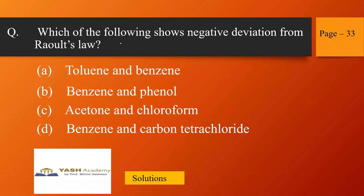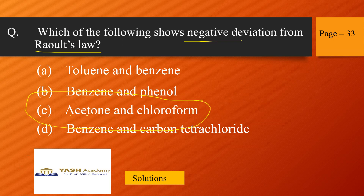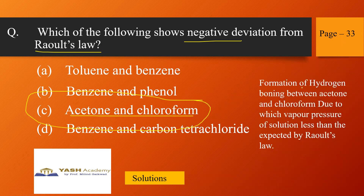Next, from solutions, page 33 — which of the following shows negative deviation from Raoult's law? The correct answer is option C: acetone and chloroform. There is formation of hydrogen bonding between acetone and chloroform, making the solute-solvent interaction much stronger than solvent-solvent and solute-solute interactions. This causes the vapor pressure of the solution to be lower than expected by Raoult's law, showing negative deviation.